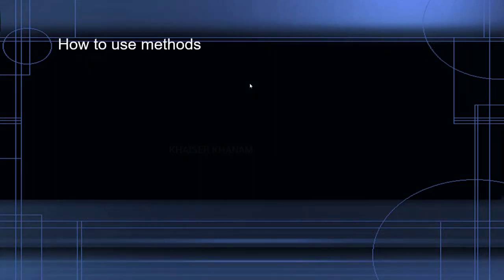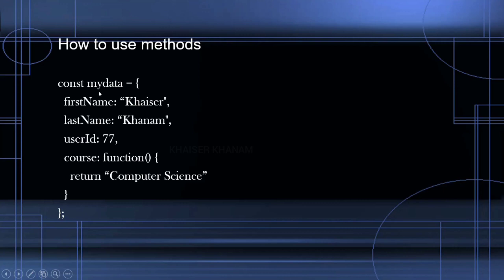So now, how to use methods. In this example I have first name, last name, user ID, and one course property. Inside this method I am just defining one function — I have passed one function and this function is returning computer science. Just understand: this is called a method. When we are assigning or defining one function inside a property, it becomes a method.